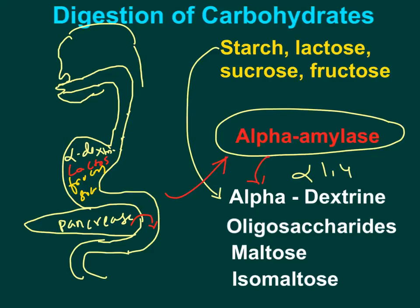If salivary alpha amylase did not work in the mouth because some people swallow food without chewing properly, then pancreatic alpha amylase will have an overload of work, acting directly on starch. Overall, pancreatic alpha amylase acts on alpha dextrin or starch and breaks it down into oligosaccharides, maltose, and isomaltose.